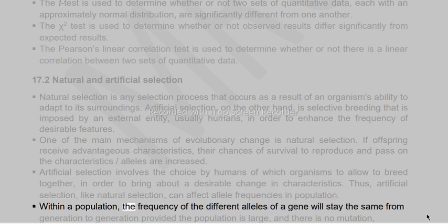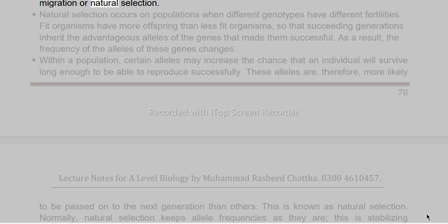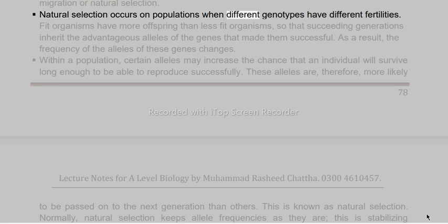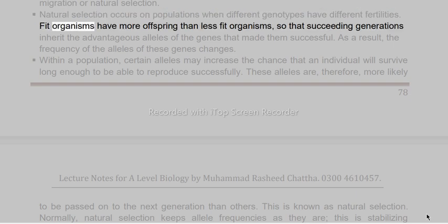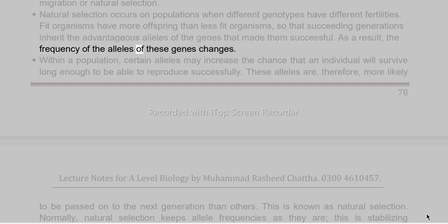Within a population, the frequency of the different alleles of a gene will stay the same from generation to generation provided the population is large, and there is no mutation, migration, or natural selection. Natural selection occurs on populations when different genotypes have different fertilities. Fit organisms have more offspring than less fit organisms, so that succeeding generations inherit the advantageous alleles that made them successful.